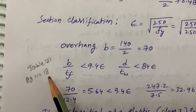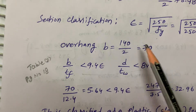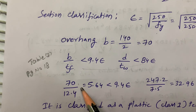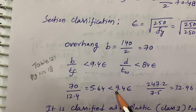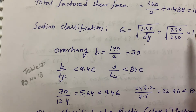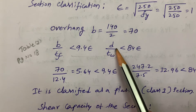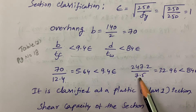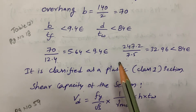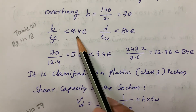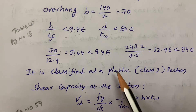B is the overhanging portion of the flange, which is 140/2 = 70 mm. So B/TF = 70/12.4 = 5.64, which is less than 9.4ε = 9.4. Also D/TW = 247.2/7.5 = 32.96, which is less than 84ε = 84. Since both conditions are satisfied, the code specifies this belongs to Class 1 — plastic section.